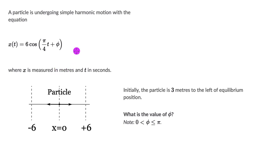A particle is undergoing simple harmonic motion with the equation x(t) = 6 cos(πt/4 + φ), where x is measured in meters and t in seconds. Here we can see the motion of the particle, the SHM of the particle.